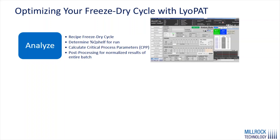When developing or optimizing a freeze drying cycle using the LiOPAT features available in the MicroFD, we recommend starting by analyzing your existing or new cycle by running a plain, recipe-based freeze drying cycle — either based on existing conditions or a more conservative cycle you can safely process your product at. During the cycle, we calculate using the LiOPAT heat flux sensor our critical process parameters throughout the run, and use post-processing to get normalized results accounting for all heat flow in the system.